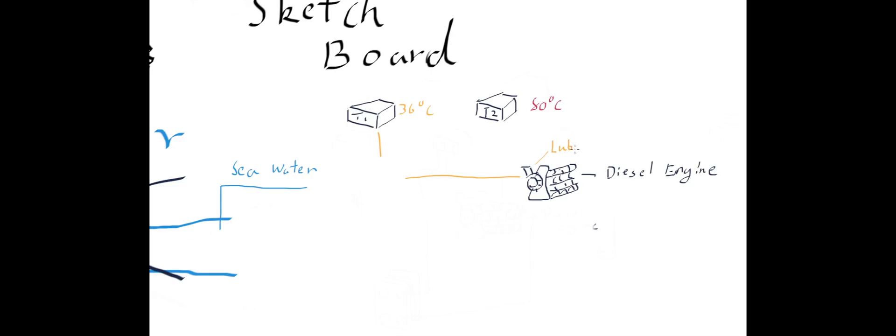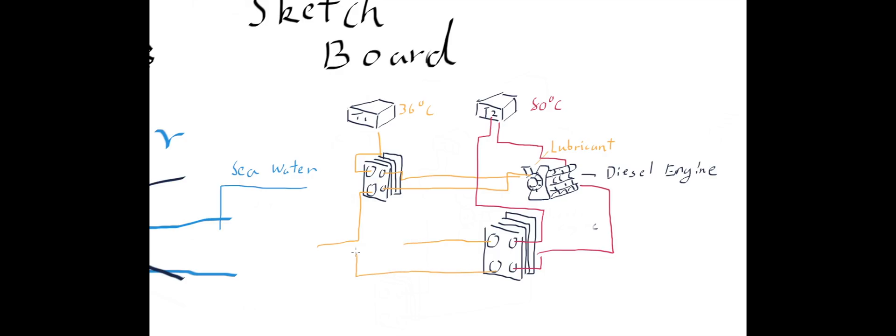First, the lubricant of this diesel engine will be cooled by tank 1 water with a plate heat exchanger. Then the combustion chamber of this diesel engine will be cooled by tank 2 water, and that heated up tank 2 water will be cooled by tank 1 water with another plate heat exchanger.